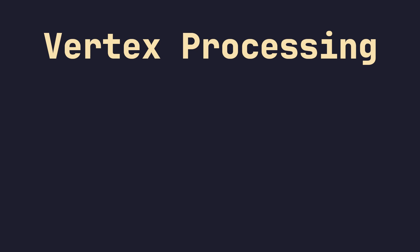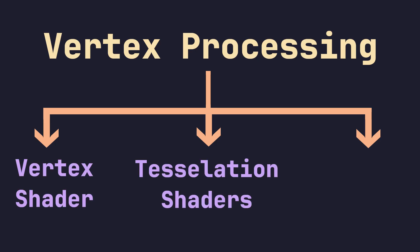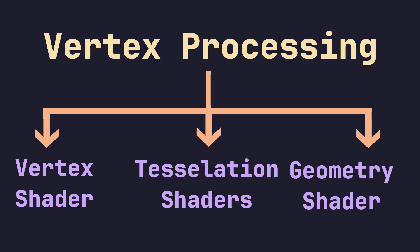In the first part — the vertex processing part — there are basically three main steps: the vertex shader, the tessellation step which consists of two shaders, and then the geometry shader step. Among these three, we only care about the vertex shader, which is the one we have to write. The other two are optional and used for some advanced features, but we don't need them yet.